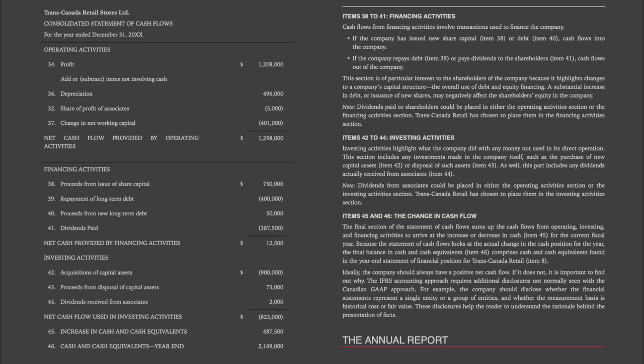Items 42 to 44, investing activities. Investing activities highlight what the company did with any money not used in its direct operation. This section includes any investments made in the company itself, such as the purchase of new capital assets (item 42) or disposal of such assets (item 43). This part also includes any dividends actually received from associates (item 44). Note that dividends from associates could be placed in either the operating activities section or the investing activities section; in the TransCanada Retail example, they have chosen the investing activities section. Items 45 and 46, the change in cash flow. The final section sums up the cash flows from operating, investing, and financing activities to arrive at the increase or decrease in cash (item 45) for the current fiscal year. The final balance in cash and cash equivalents (item 46) comprises cash and cash equivalents found in the year-end statement of financial position for TransCanada Retail (item 8).